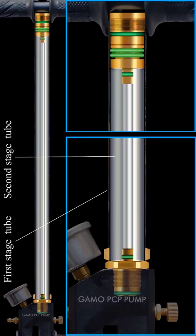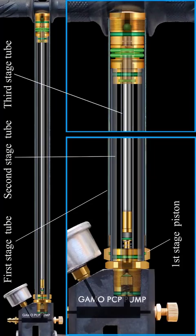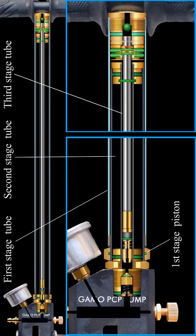The external tube is the first stage. The first stage piston is installed in it. This piston moves around the second stage tube. The third stage piston moves in the third tube.